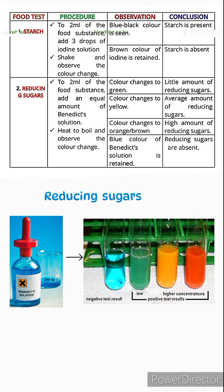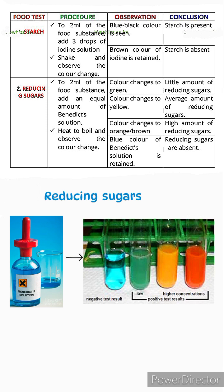There are four possible observations for the reducing sugars test. Blue to green indicates reducing sugars present in small amounts. A yellow color indicates a moderate amount. An orange or brown color indicates high amounts. If the blue color of Benedict's solution is retained after heating, reducing sugars are absent.